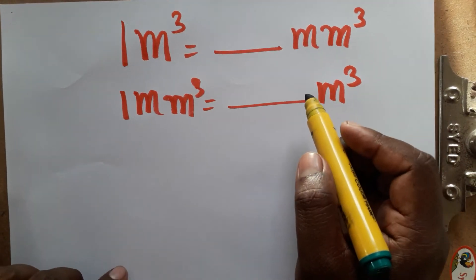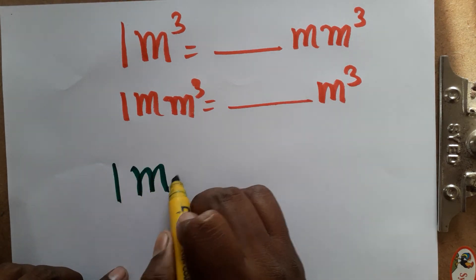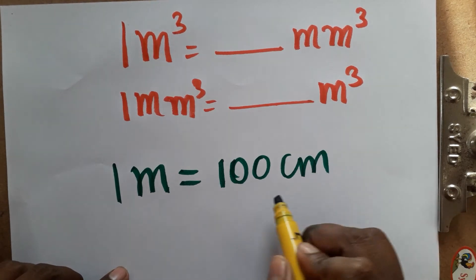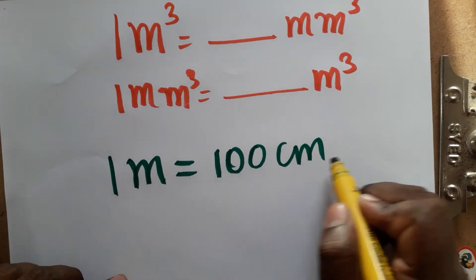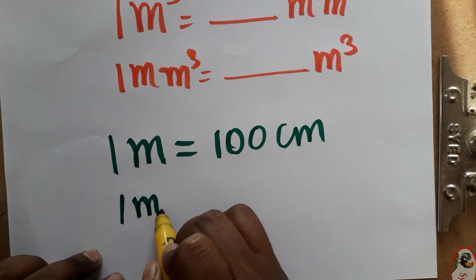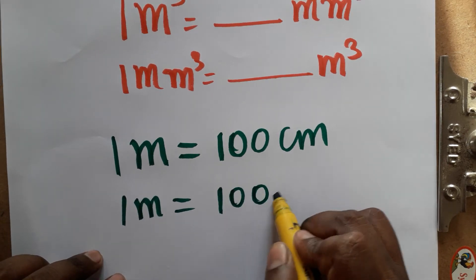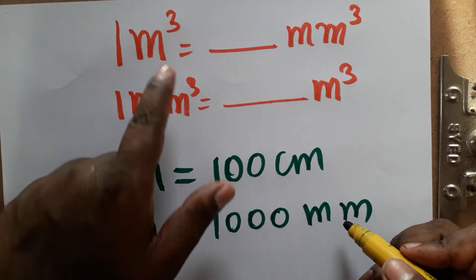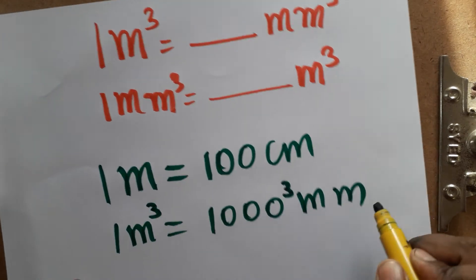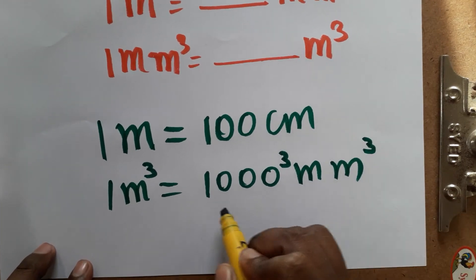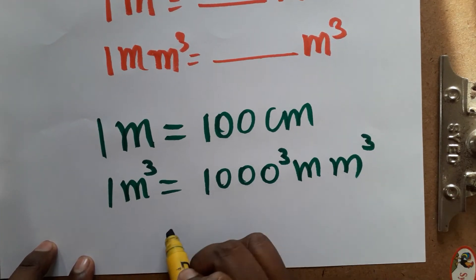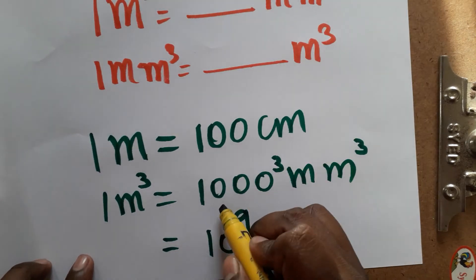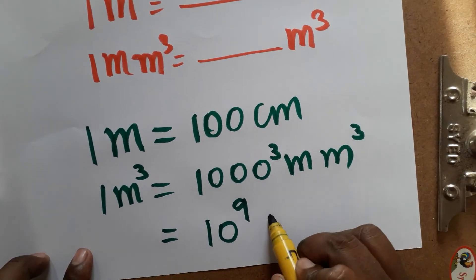So, 1 meter is equal to 100 centimeters, and 1 centimeter is equal to 10 millimeters. That means 1 meter equals 1000 millimeters. Since we have meter cubed, we cube 1000 — that is 1000 × 1000 × 1000, which gives us 10 power 9, because there are three groups of three zeros: 10 power 9.